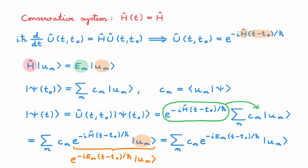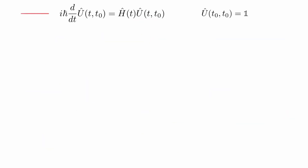We end up with a sum over n of cₙ times exp(−iEₙ(t−t₀)/ħ) times the eigenstate |uₙ⟩. This means that if we start at time t₀ with a quantum state expanded in the energy basis, then at a later time t the state is given by the same expansion where each energy eigenstate has independently evolved according to an exponential that depends on the corresponding energy eigenvalue. This result was already derived in the video on the Schrödinger equation, but the time evolution operator allows us to approach the same problem in an alternative but equivalent way.